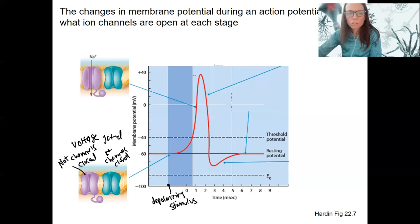So sufficient to reach threshold at the axon hillock. This is going to cause the voltage gated sodium channels to open, causing depolarization, blip, like that, right?